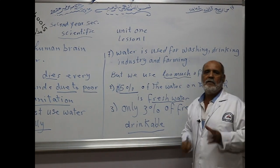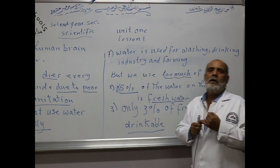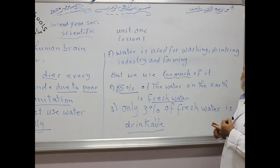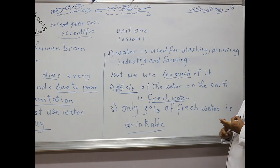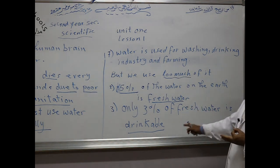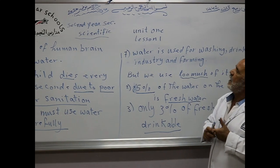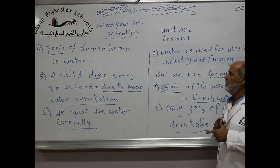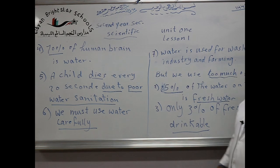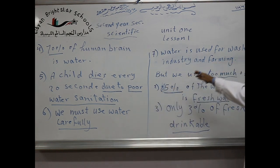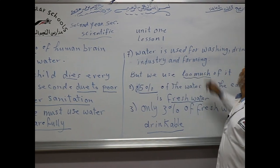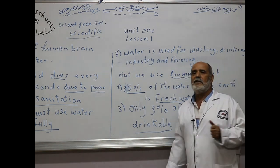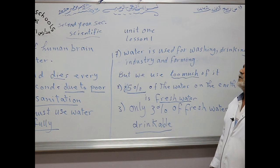If we study these points easily, there are seven points. Number one: water is very vital for life. Number two: 25% of water on the earth is fresh water. Only 3% of fresh water is drinkable. Number four: 70% of the human brain is water. A child dies every 20 seconds due to poor water sanitation. We must use water carefully. The last one: water is used for washing, drinking, industry, and farming. These facts show us that water is very important.